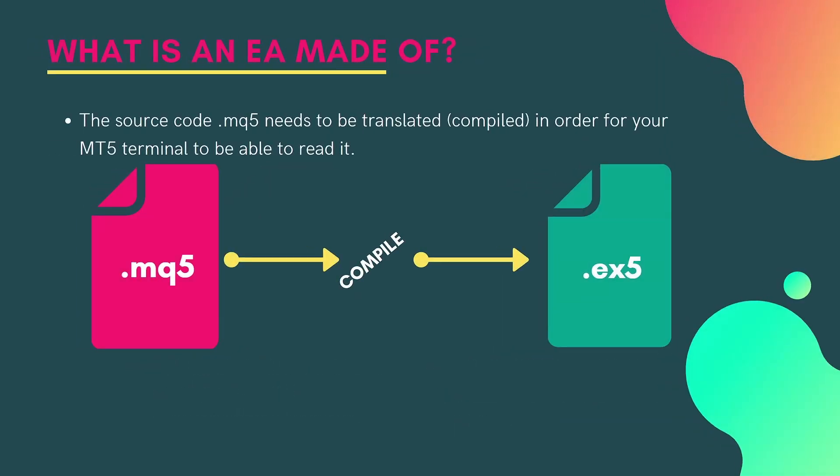The source code .mq5 that we write needs to be translated — in computer science terminology, this means compiled — in order for your MT5 terminal to be able to read it. We write the .mq5 file, it gets compiled, and if there are no errors it produces an .ex5 file which MetaTrader can read.